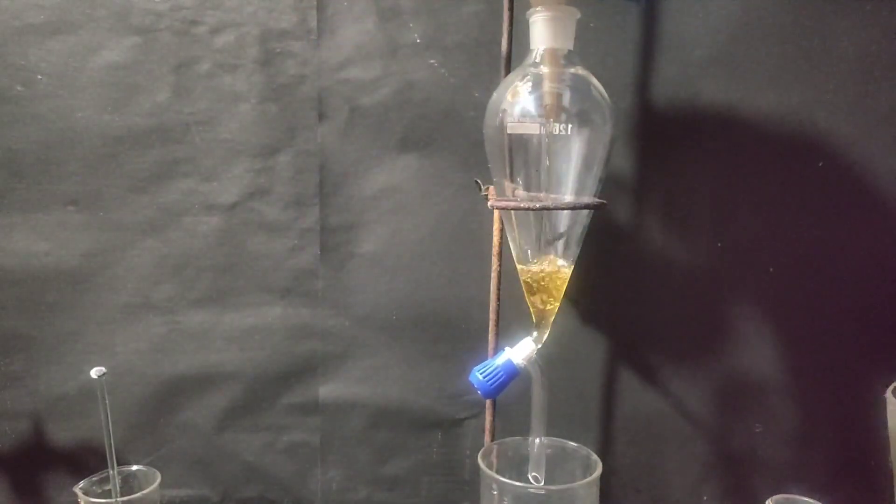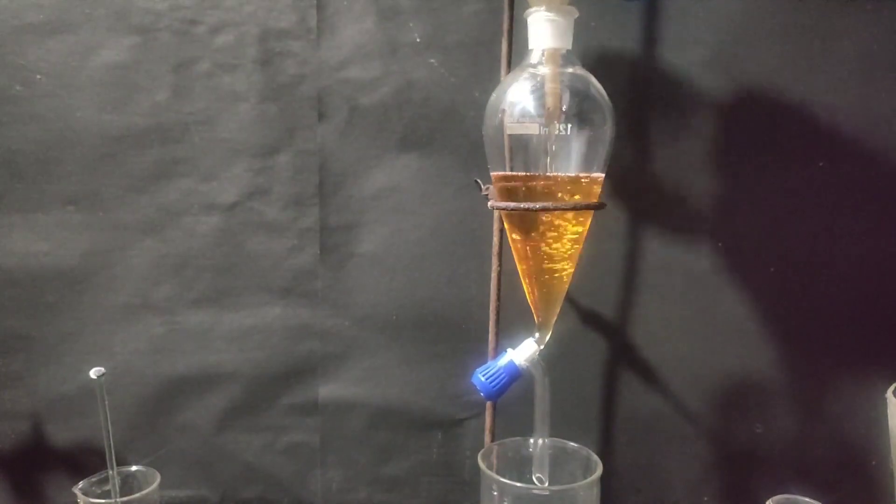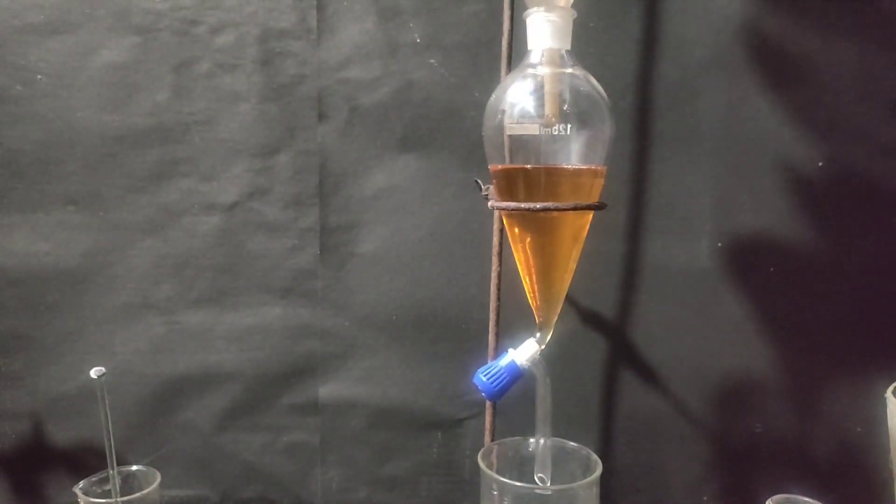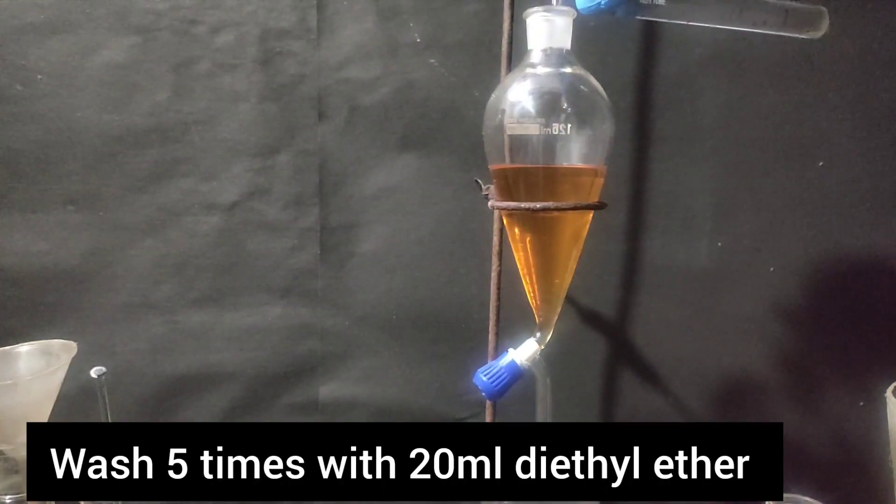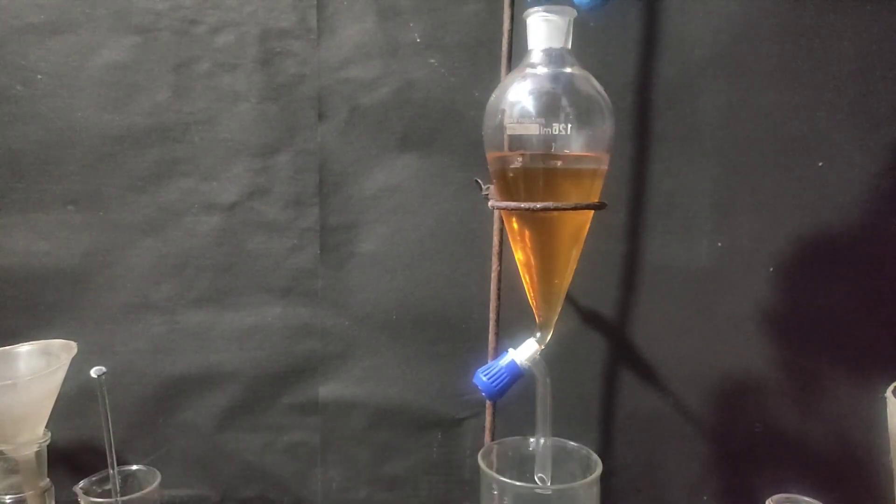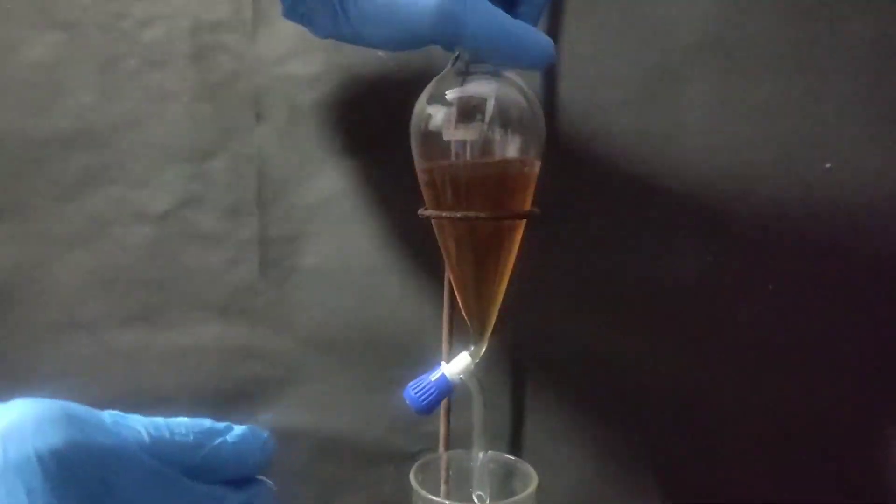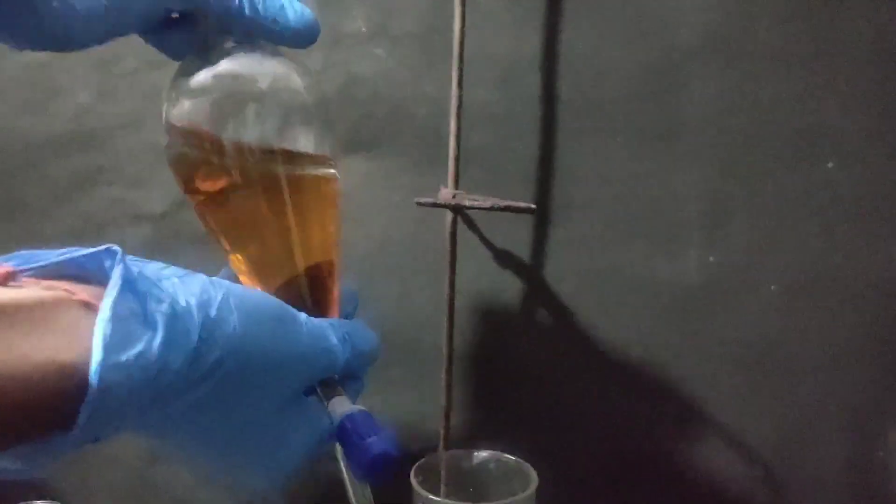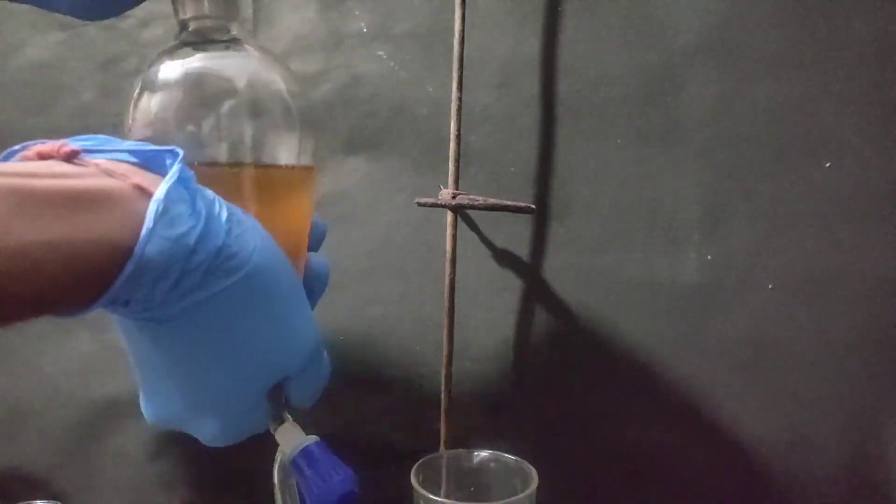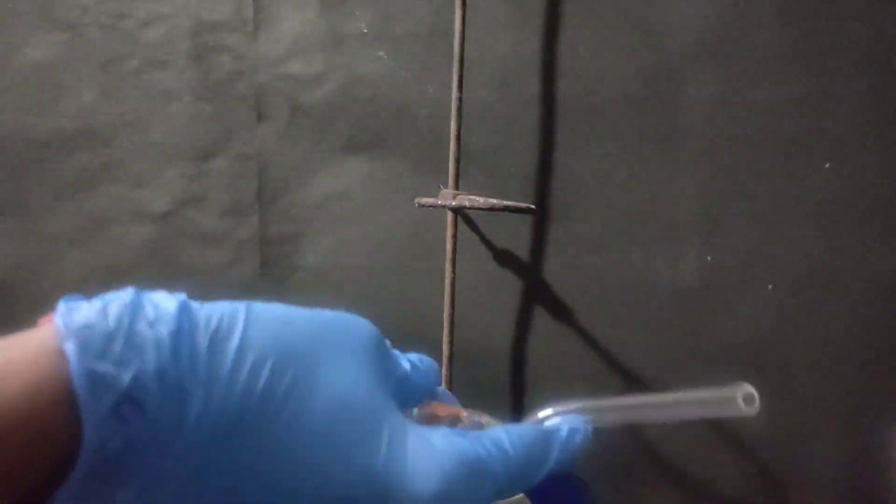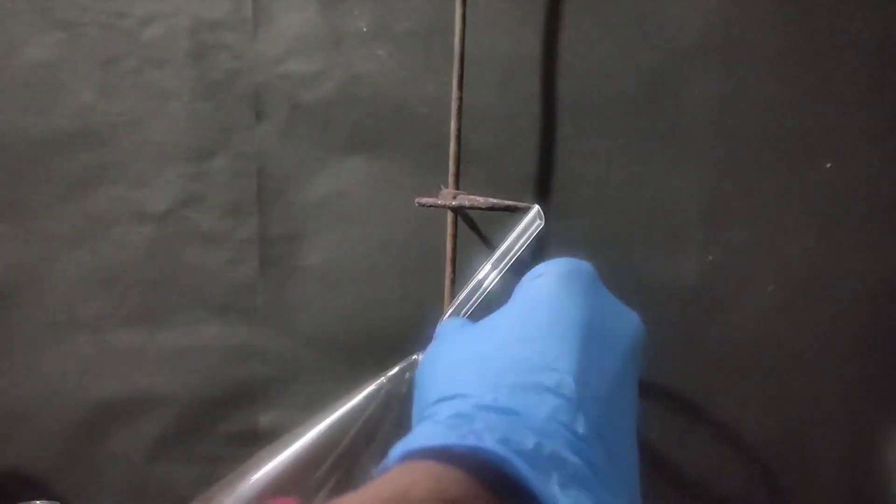Since benzyl alcohol is slightly soluble in water it has to be extracted 5 times with 20 ml diethyl ether. For time sake I am showing only first extraction. I poured 20 ml of diethyl ether in the separatory funnel, capped, shook and vented several times and the layers were allowed to separate.